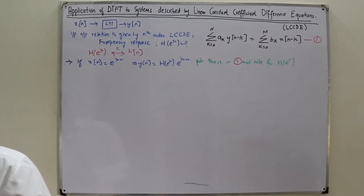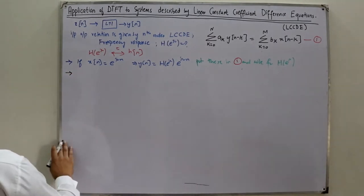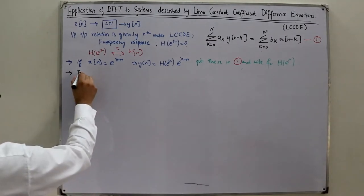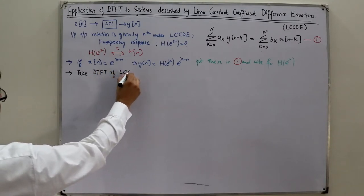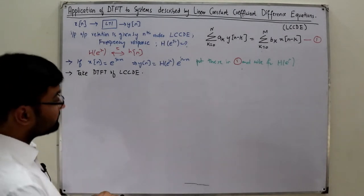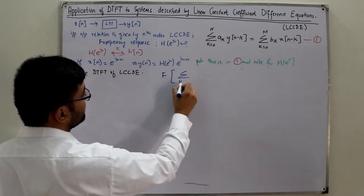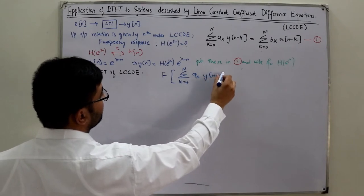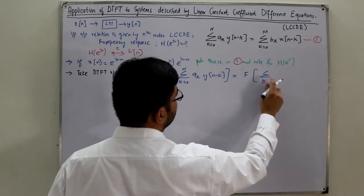Since we have the Fourier tool available, method two is simpler: take the discrete time Fourier transform of the given LCCDE. The Fourier transform on the left-hand side and similarly on the right-hand side are computed.